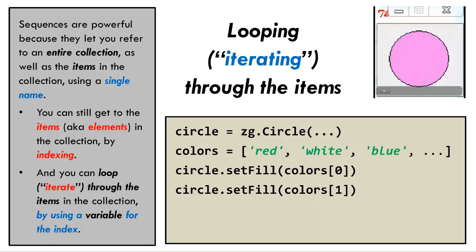We then set the fill of the circle to color[1], again using the square bracket notation. Here, that makes the circle turn white.